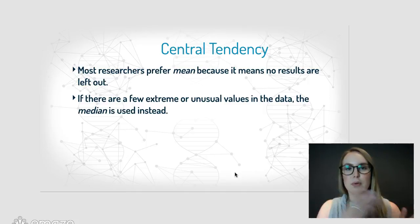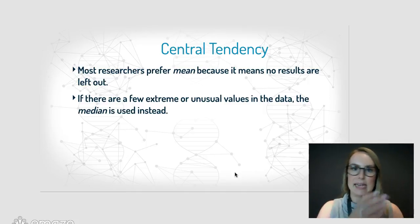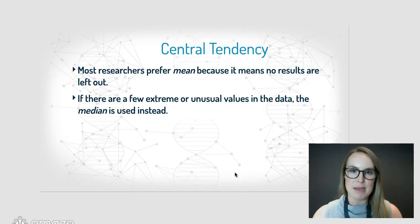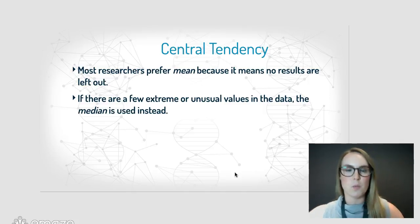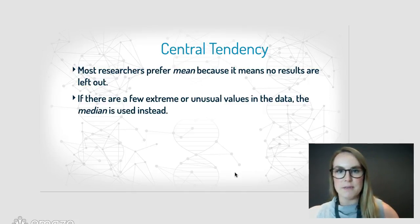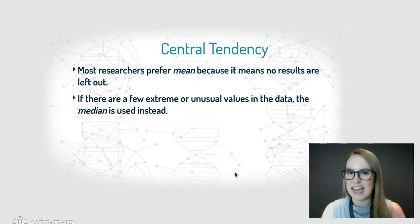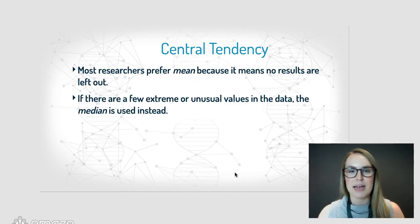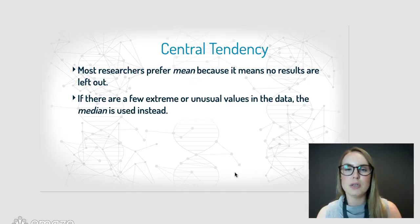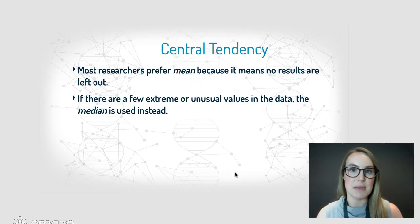For example, if you put all the grades down — mostly A's and B's, maybe one C, and then one E — the middle score would probably be an A or a B. So that outlier result hasn't totally changed the results the way a mean would.